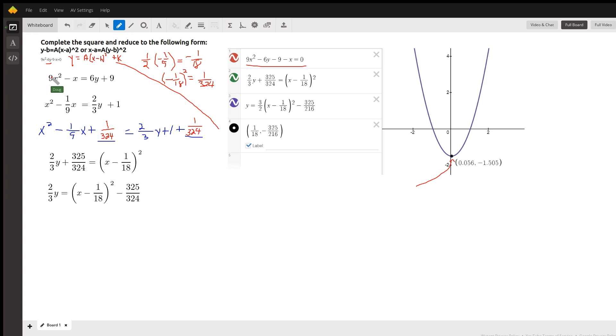And then before completing the square, you have to have the coefficient of x squared equal to 1, or at least that's the easiest way to complete the square. So divide every term on both sides by 9. x squared minus 1 ninth x equals 6 ninths is 2 thirds, 9 divided by 9 is 1.